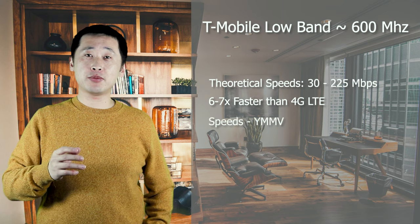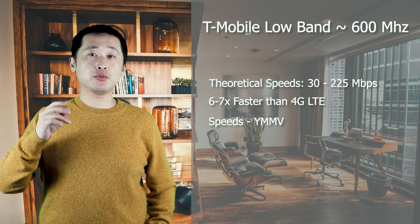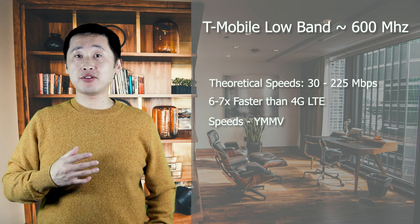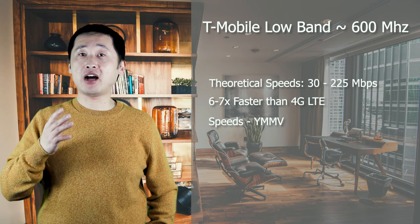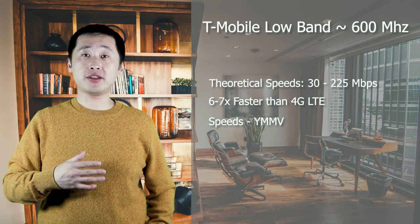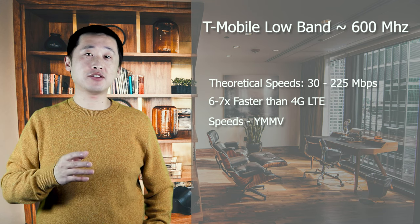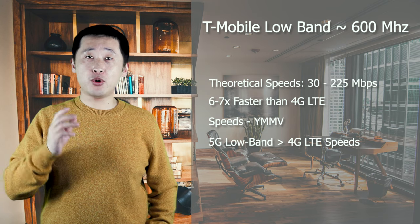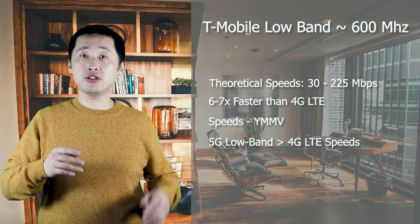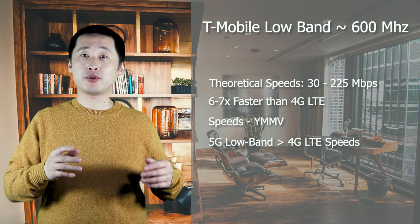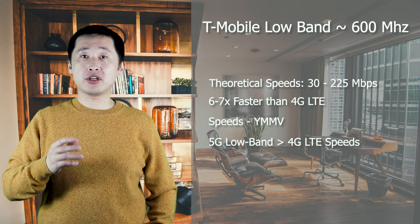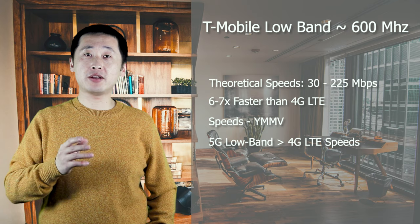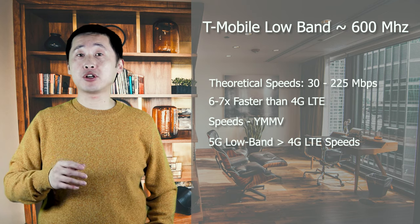However, low band 5G depends on where you live, and in real-world tests it comes nowhere close to those peak numbers. As you can see from my 5G download speed tests, I never achieved speeds higher than 30 to 40 megabits during my tests. However, that speed is still faster than 4G speeds observed on my Pixel 3 XL. In most cases, low band 5G will be a little bit better than 4G with guaranteed widespread coverage and the 600 MHz signal's ability to pierce windows and walls — and that's not a bad starting point for 5G.